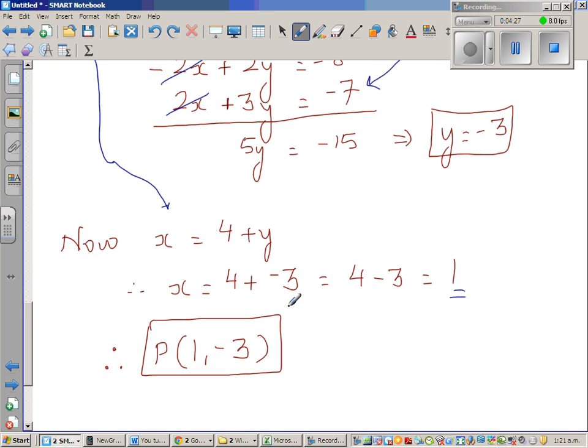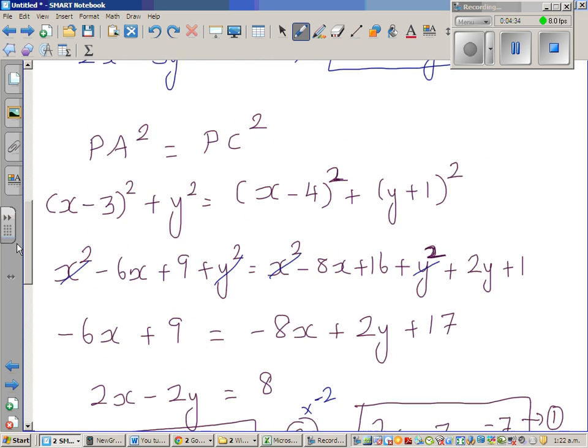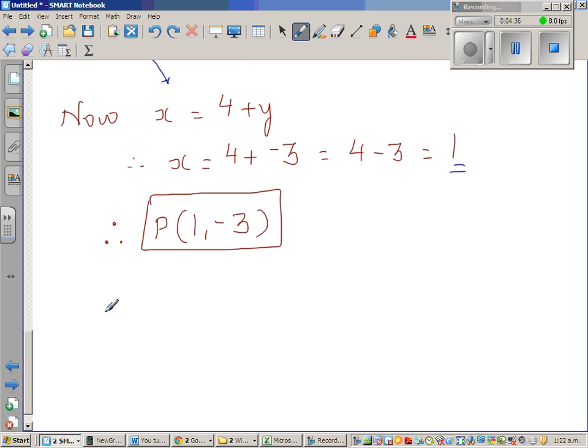So the circumcentre is (1,-3). Now you can check yourself, try to, you know the coordinates a, b, and c, check whether AP is equal to BP is equal to CP.